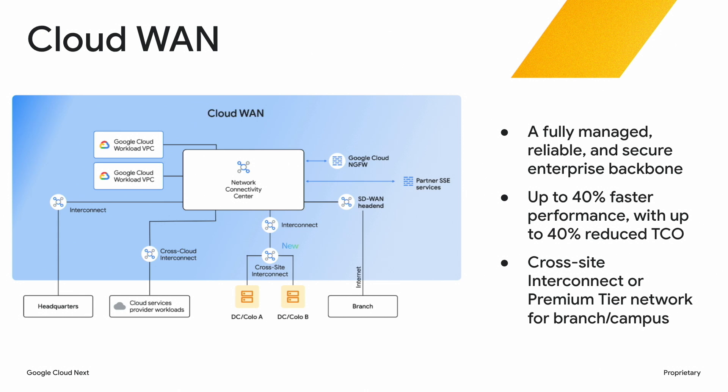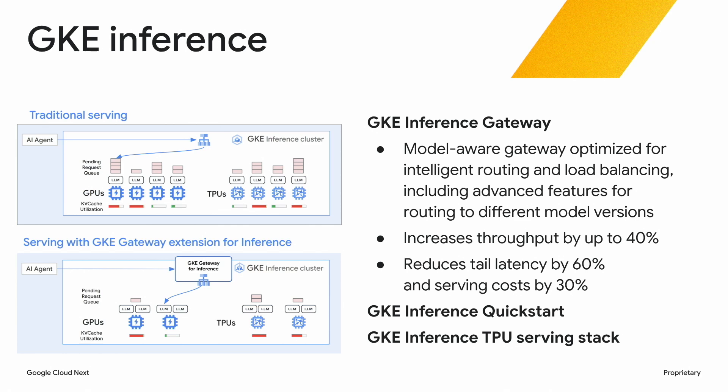I'll briefly touch on GKE Inference. This is something we're doing specifically around networking and GKE to improve AI training. The typical round-robin network distribution for Layer 2/3 access can wind up with hotspots, especially at large-scale cluster deployments. The inference gateway makes it possible to have a more intelligent way to route traffic to available clusters, increasing throughput by up to 40% and reducing tail latencies. Throughout the day you'll hear how we reduce tail latencies for cloud storage and networking, because at P95, P99 is where you want to optimize goodput and accelerator utilization. If you can reduce tail latencies, that delivers better value — the accelerators are a significant portion of overall cost of ownership, so you want to maximize utilization throughout your entire workload process.